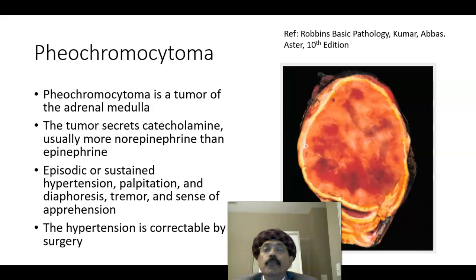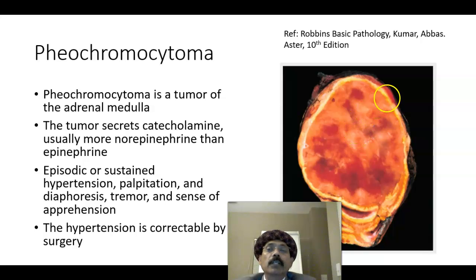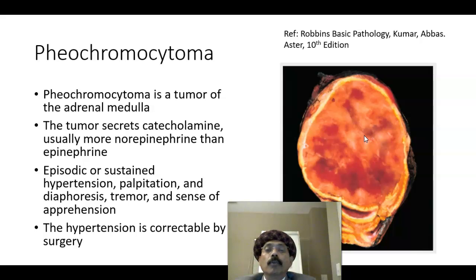Hello, my name is Dr. Divan S. Raja. Today I will discuss pheochromocytoma. Pheochromocytoma is a tumor of the adrenal medulla. The adrenal gland has two parts: on the outside we have the adrenal cortex, and on the inside we have the adrenal medulla. This is a tumor of the adrenal medulla, and in adults this tumor secretes catecholamines — usually more norepinephrine.